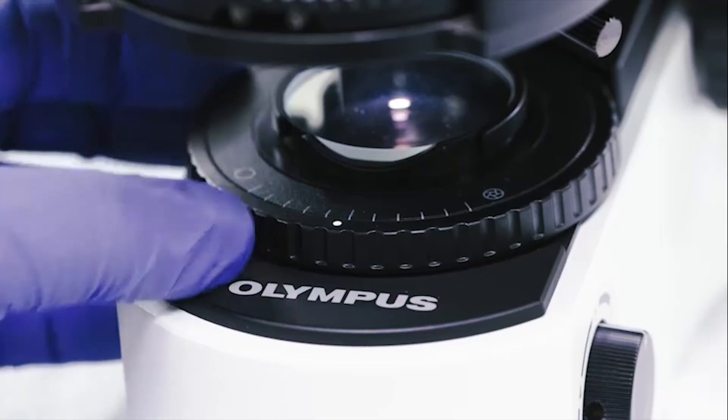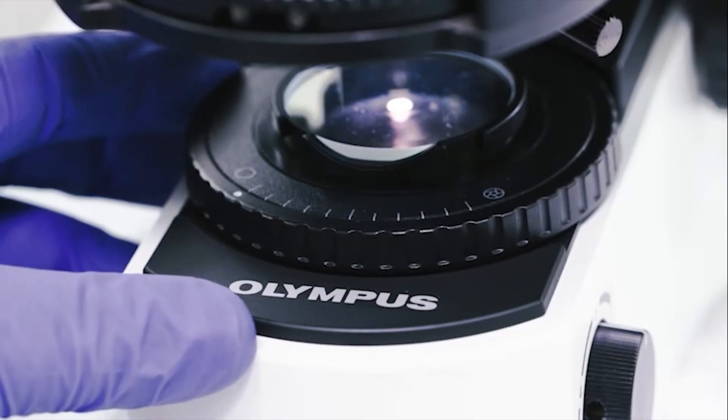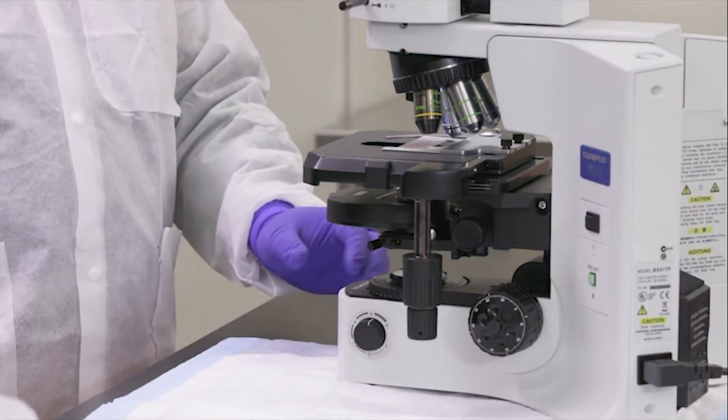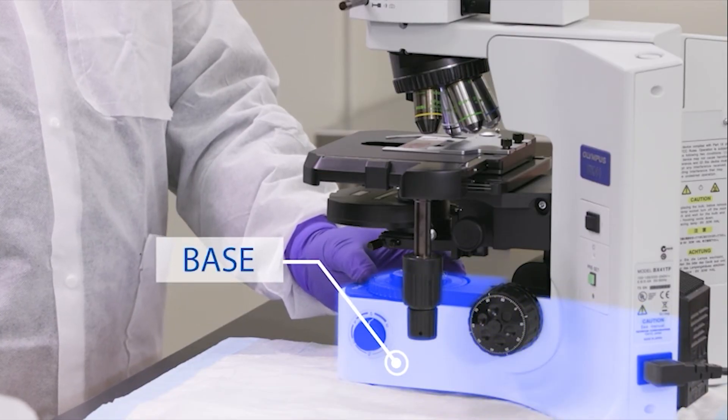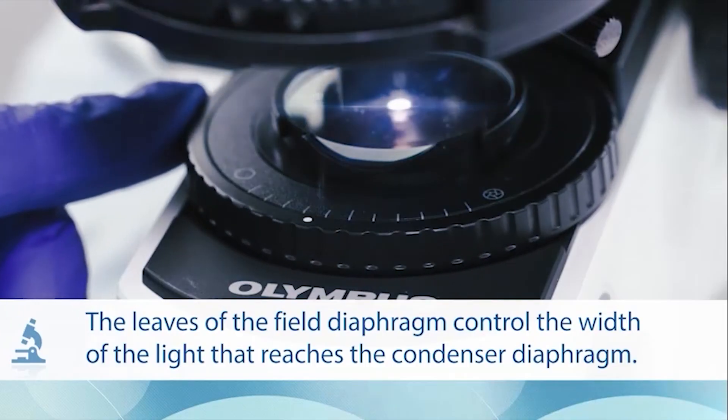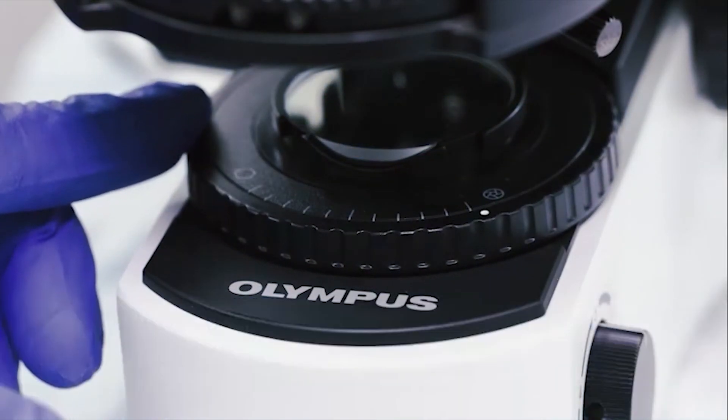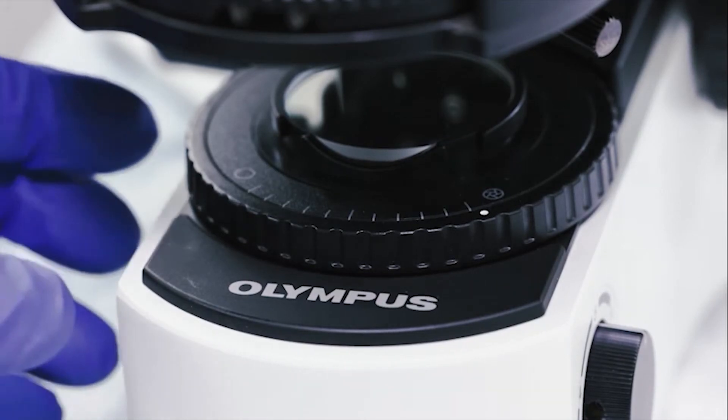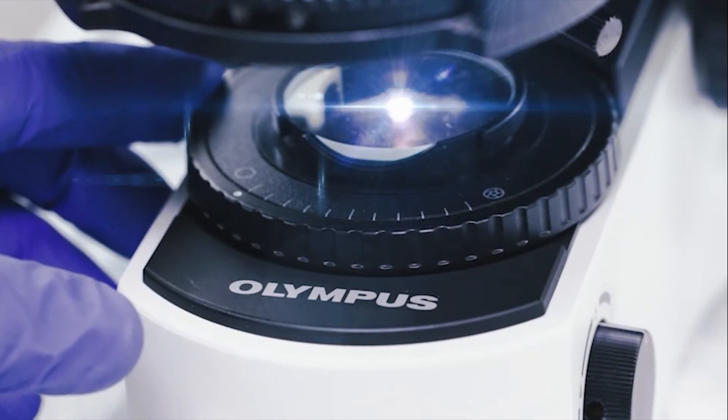The second component under the stage, important for obtaining a clear image of the specimen, is the field diaphragm. This component is attached to the third major part of the microscope, the base. The leaves of the field diaphragm control the width of the light that reaches the condenser diaphragm. Both the condenser and the field diaphragm are essential components to obtain proper illumination or Kohler illumination in your microscope.